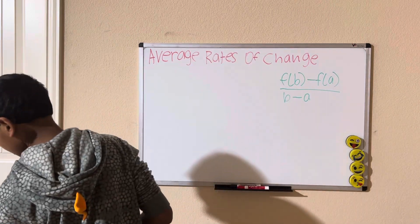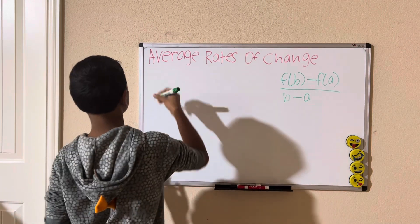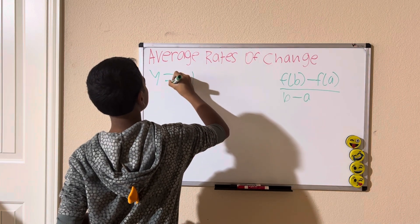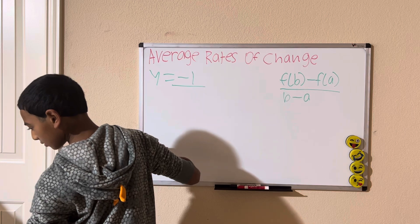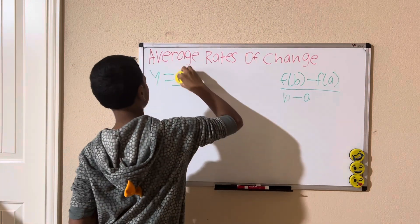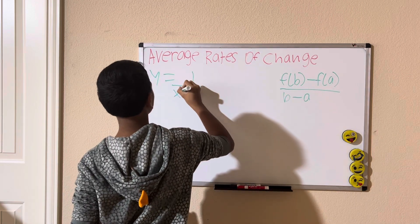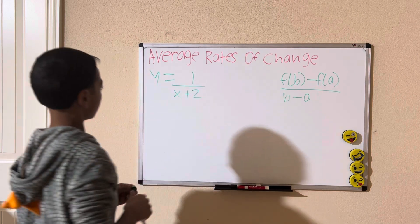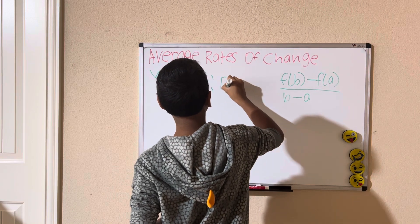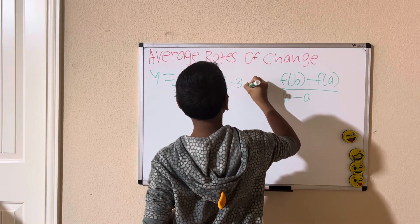Alright, let's say we have a rational function, y equals 1 divided by x plus 2, at the intervals negative 3 and negative 2.